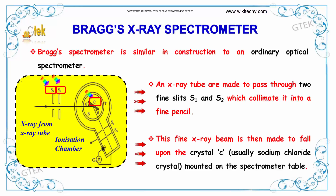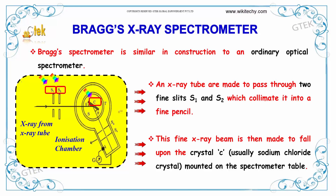Now we'll talk about the Bragg X-ray spectrometer. The Bragg spectrometer is similar in construction to an ordinary optical spectrometer. X-rays from an X-ray tube are made to pass through two fine slits, S1 and S2, which collimates them into a fine pencil beam.